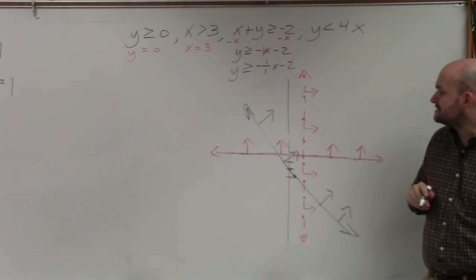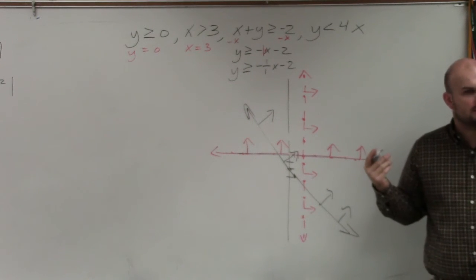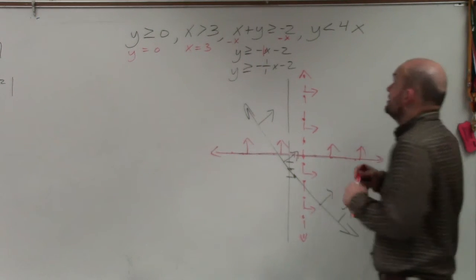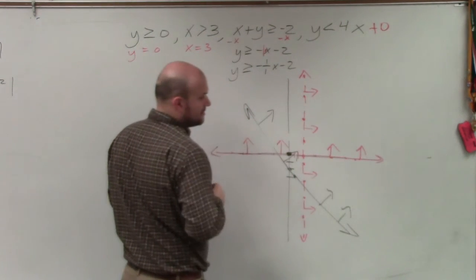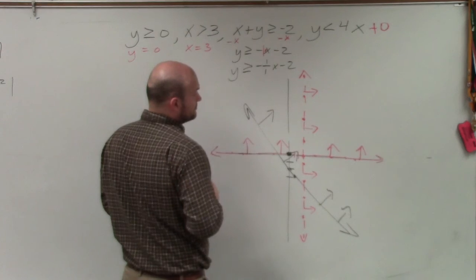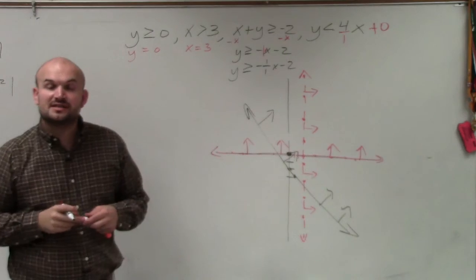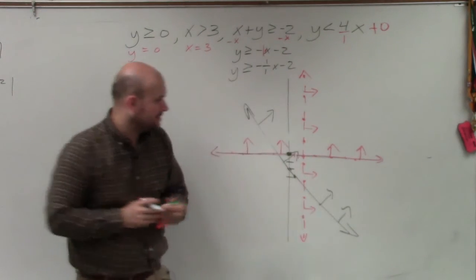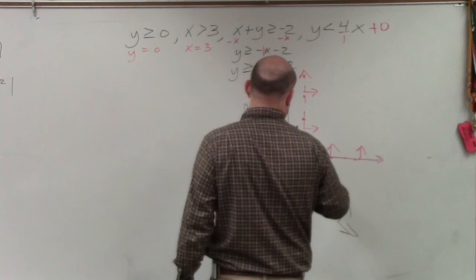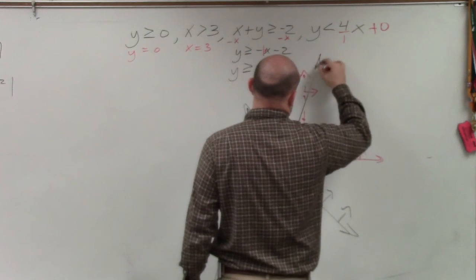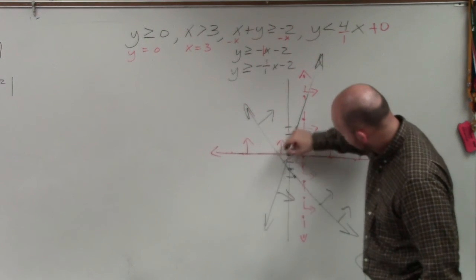And then the last equation is y is less than 4x. What's the y-intercept for this? Zero, right? It's not there. So there's my y-intercept. And then my slope can really be written as 4 over 1. Since it's both positive, that tells me to go up 4 to the right 1. So up 4—1, 2, 3, 4—to the right 1. And since that's going to be less than, that's going to be values below that line.